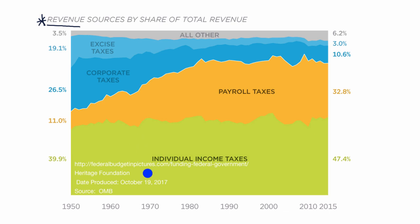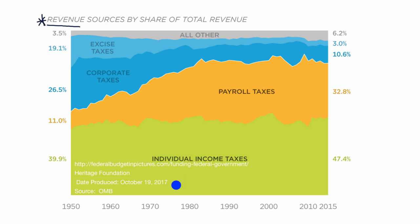You have individual income taxes, which you are probably familiar with. If you ever get a pay stub and you thought you were making $1,000 in a pay period, you might see your paycheck is closer to $600 because there might be individual income taxes taken out at both the federal and the state level.